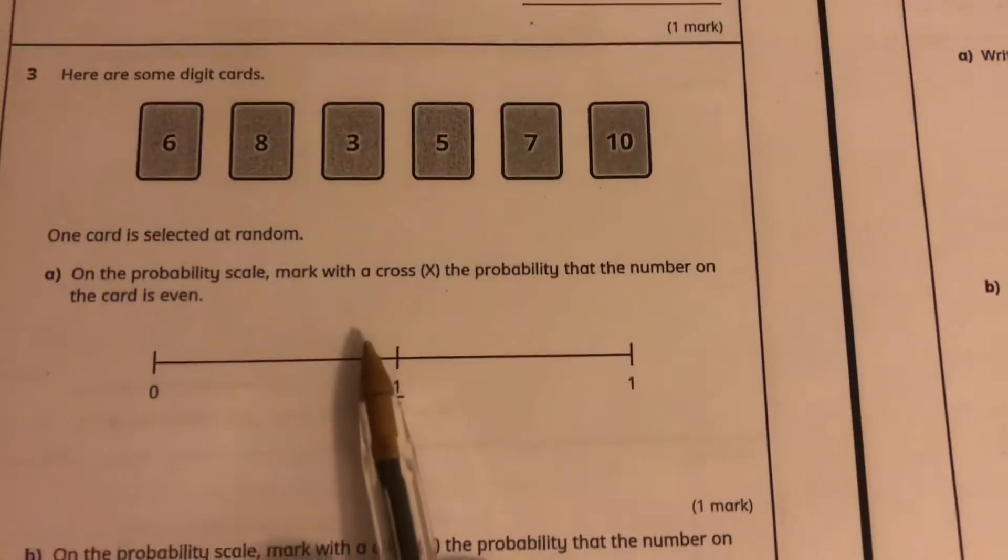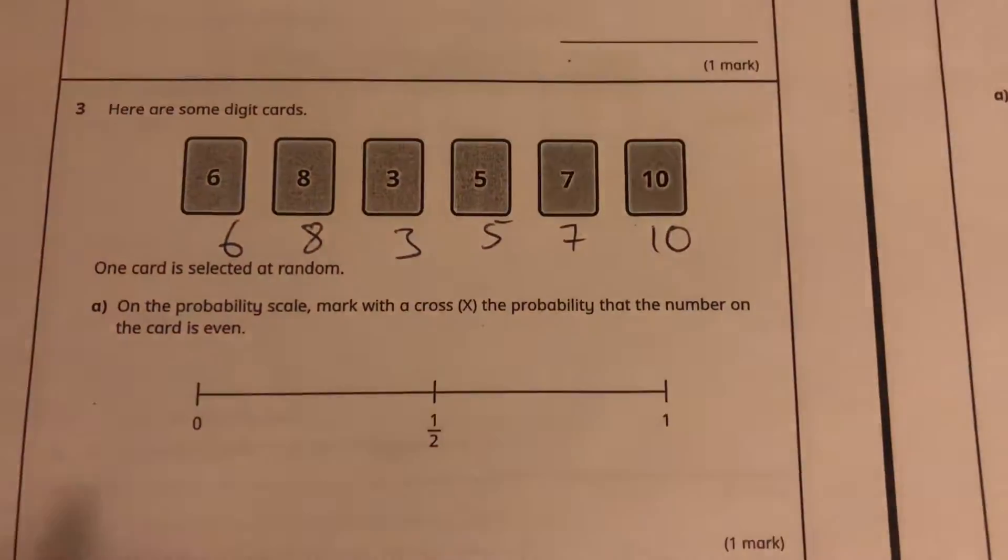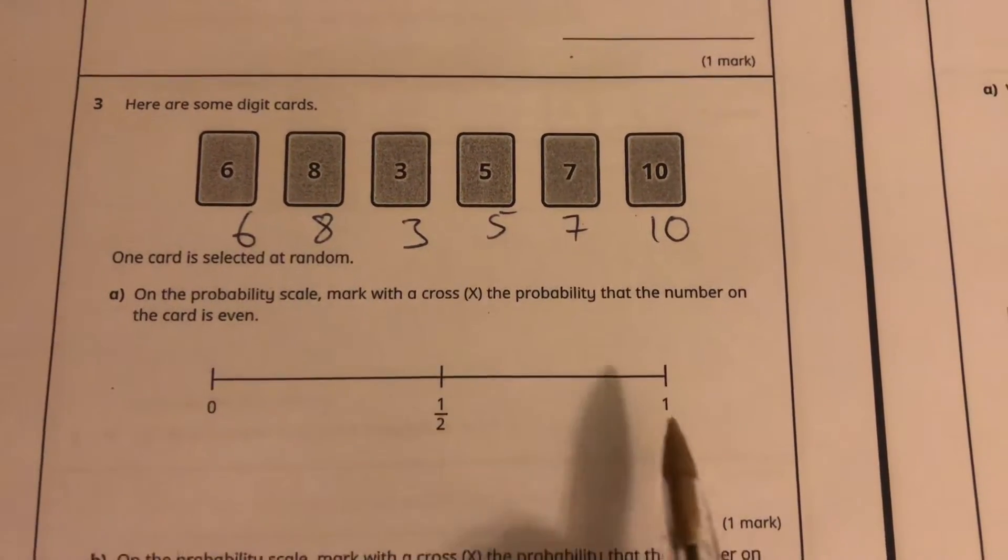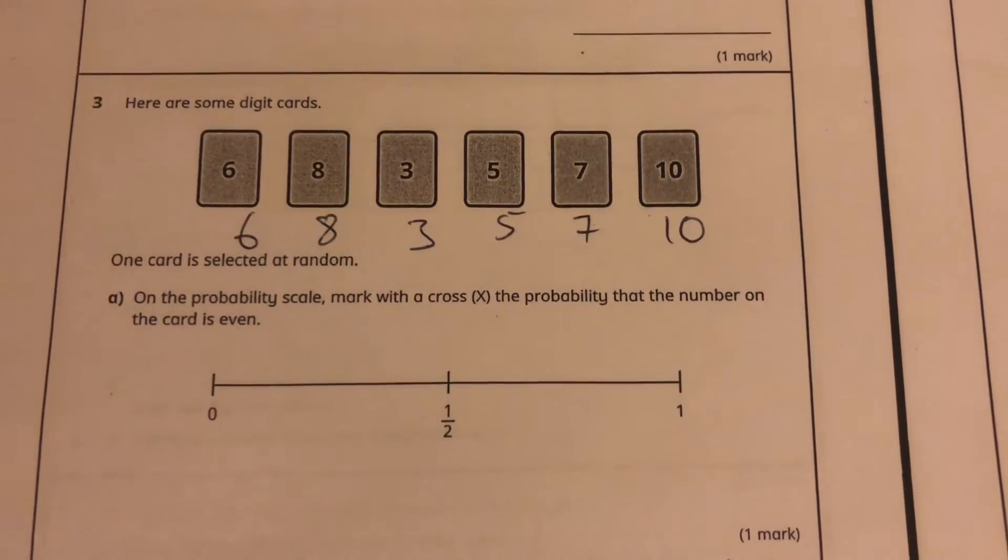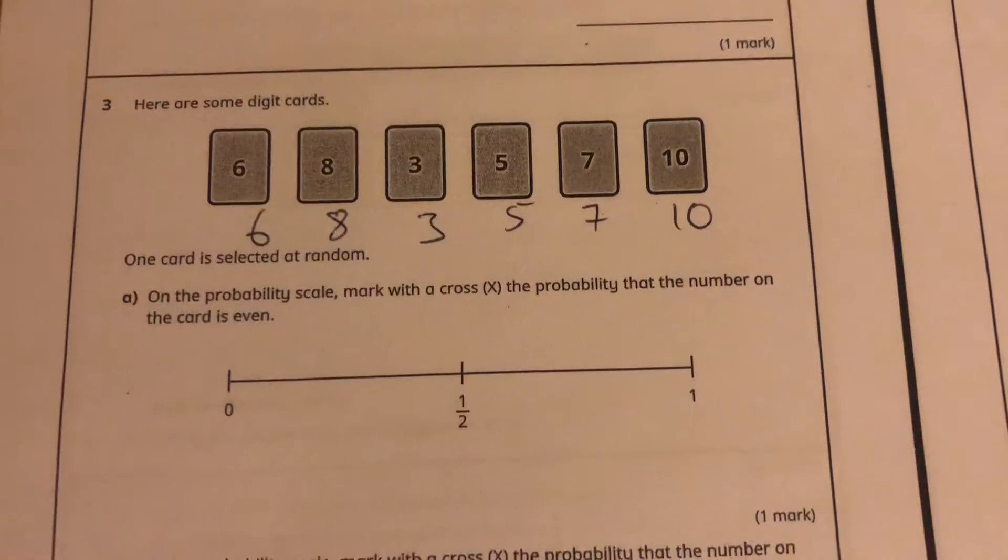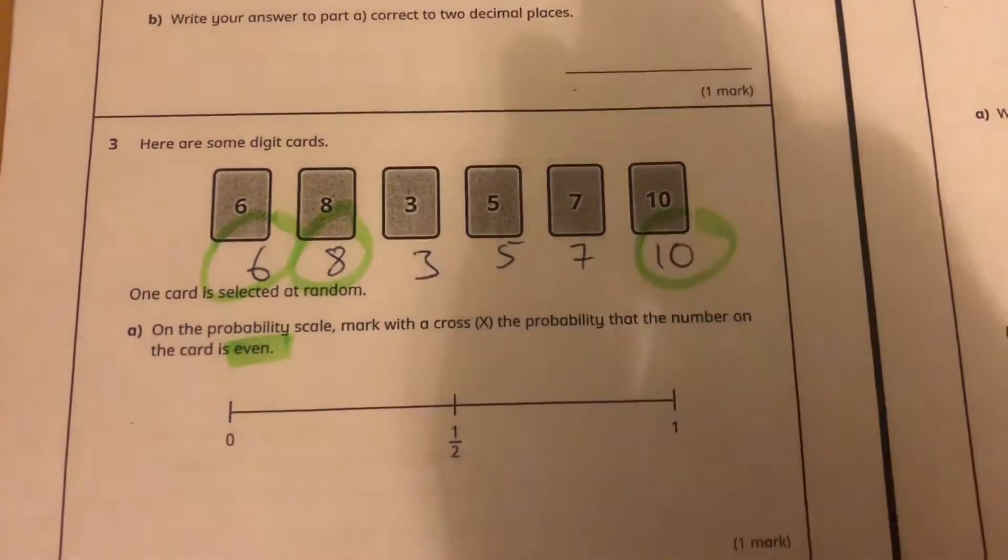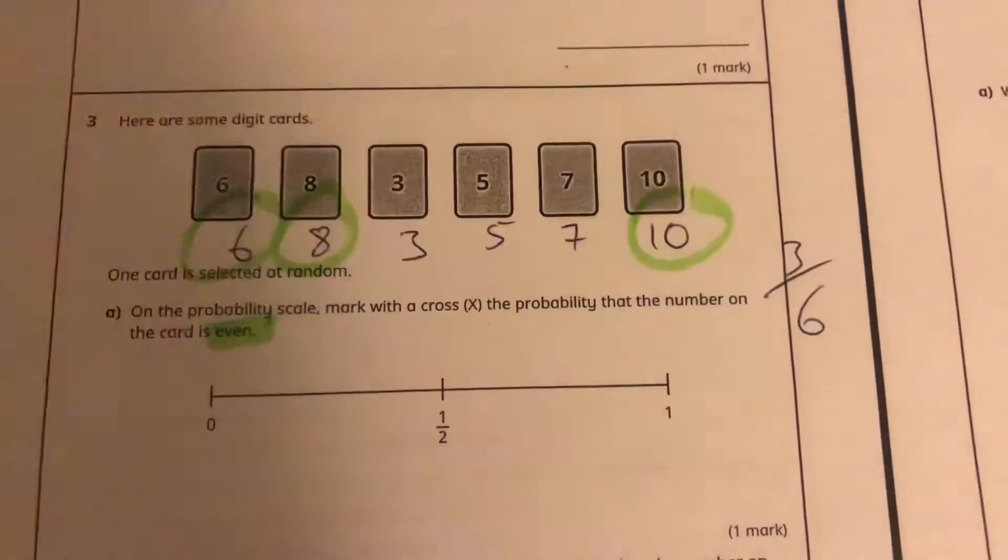I'm going to go straight to this question here. Here are some digit cards - a 6, an 8, a 3, a 5, a 7, and a 10. And it's a probability question. We know probability only lies between 0 and 1. We've got to mark with a cross the probability that the number on the card is even.